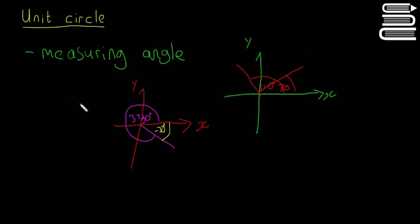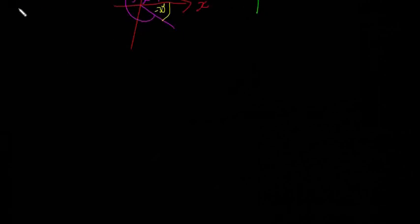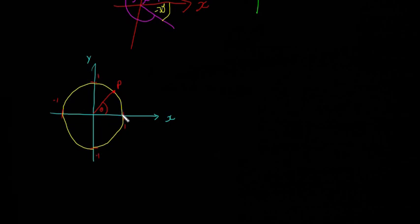The next thing I'm going to talk about is the unit circle. I just grouped all this stuff under the unit circle. So I've quickly drawn the unit circle out. We have our x and y-axis, and we have a circle with radius 1. The whole way around, the radius is always going to be 1. It hits minus 1 here, minus 1 here, 1, and then 1. The point P is just whatever point on the outside of the circle that we're talking about.